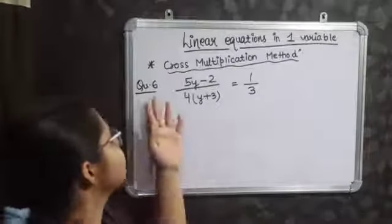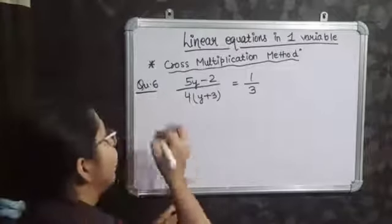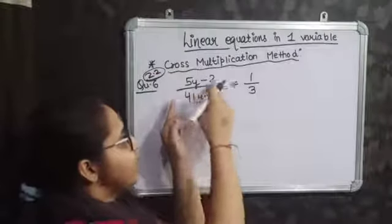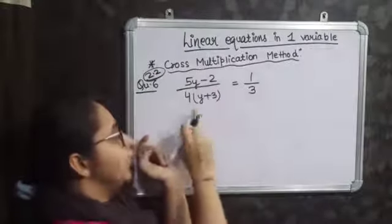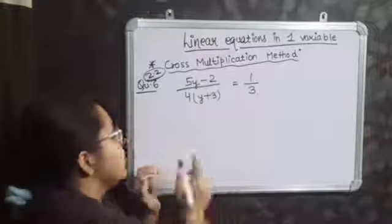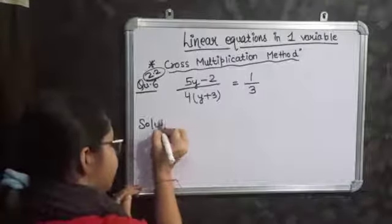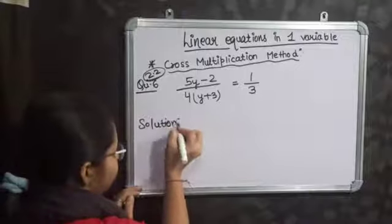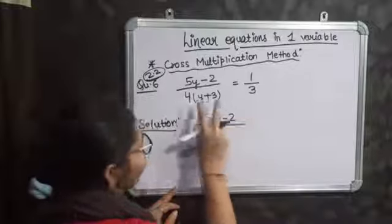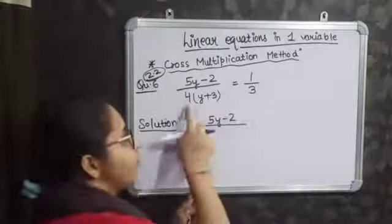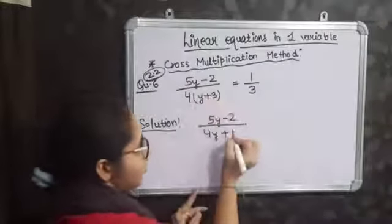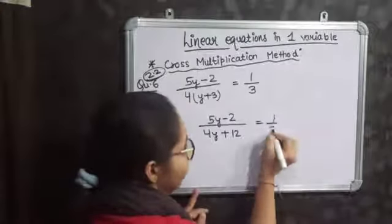Now I am taking the sixth question of exercise 2.2. This question says: 5y minus 2 upon 4 multiplied by y plus 3, is equal to 1 by 3. To solve this, write the solution and first simplify the denominator part: 4 multiplied by y plus 3 gives 4y plus 12. So the equation becomes 5y minus 2 upon 4y plus 12 equals 1 by 3.